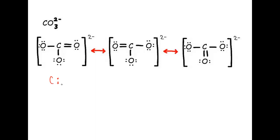For carbon in Structure 1: carbon starts off with four valence electrons because it's in Group 4. Are there any dots around carbon? No, there are no dots — it has no lone electrons, so we subtract zero for those. Now we subtract for the number of bonds it's involved with — counting the dashes: one, two, three, four dashes. Carbon has a formal charge of zero. Formal charges of zero I just leave alone; when a formal charge is not zero, I'll denote it on the actual structure.